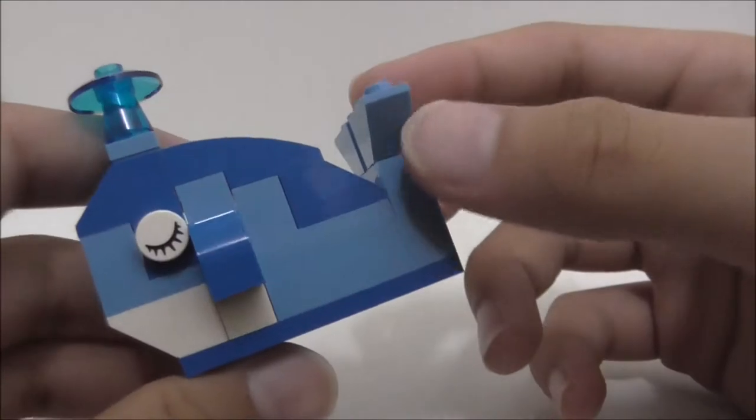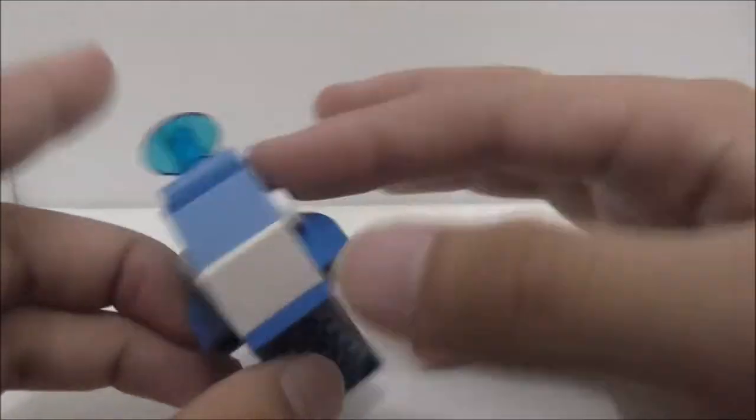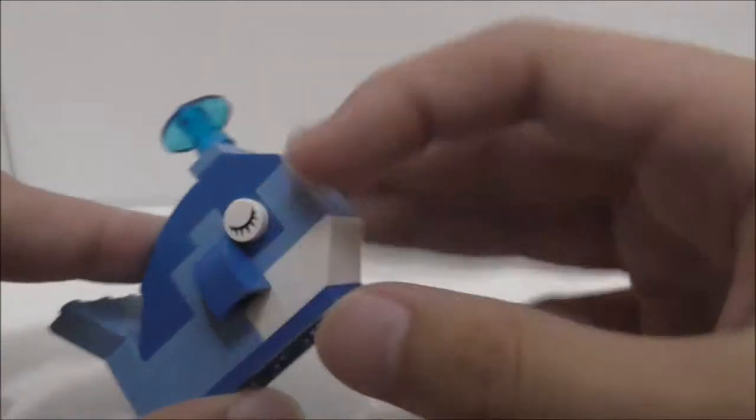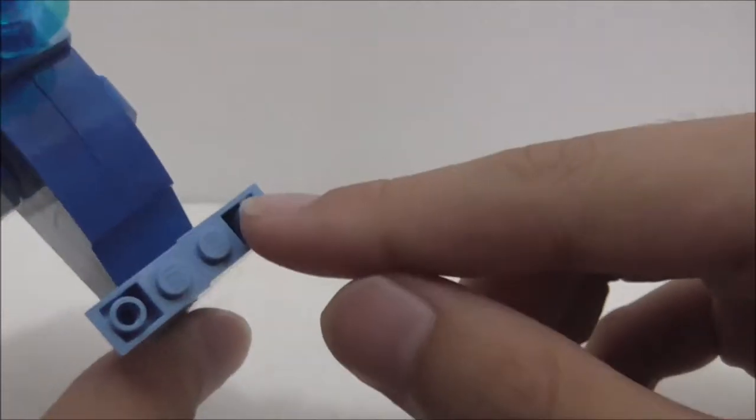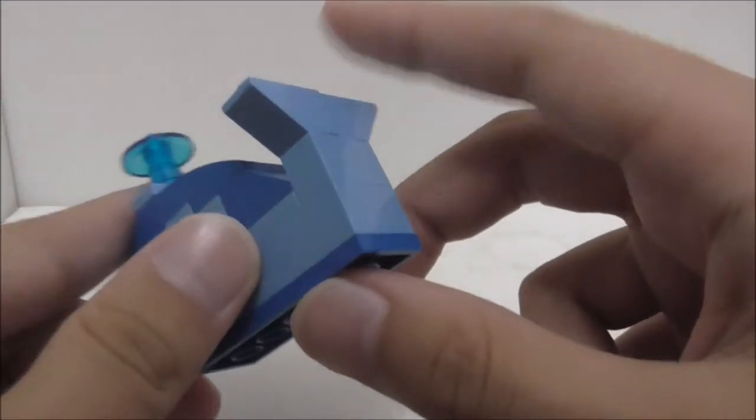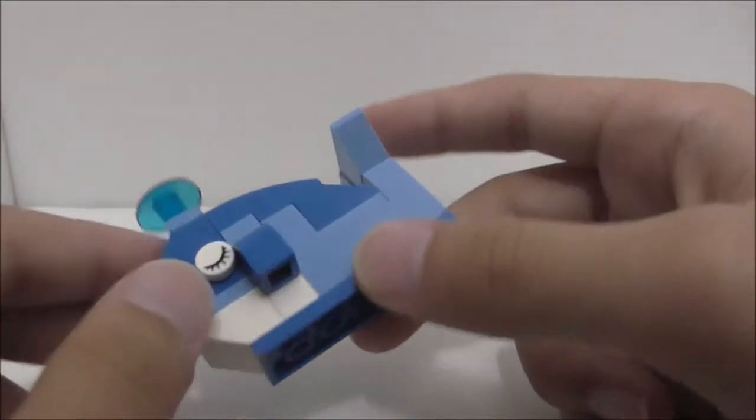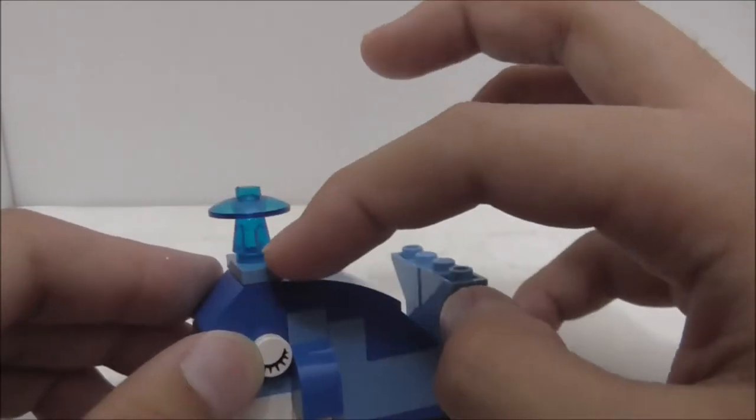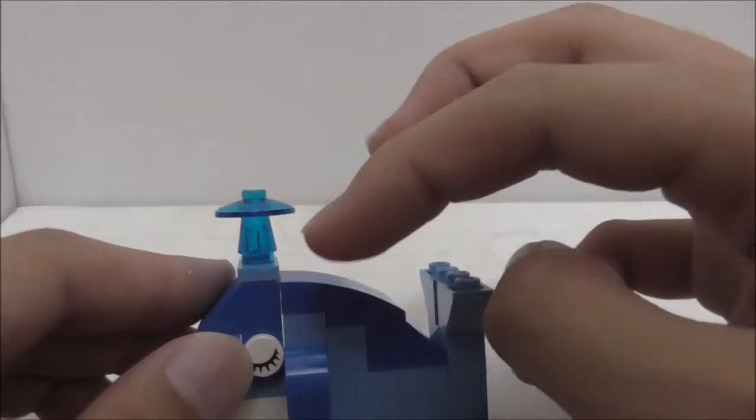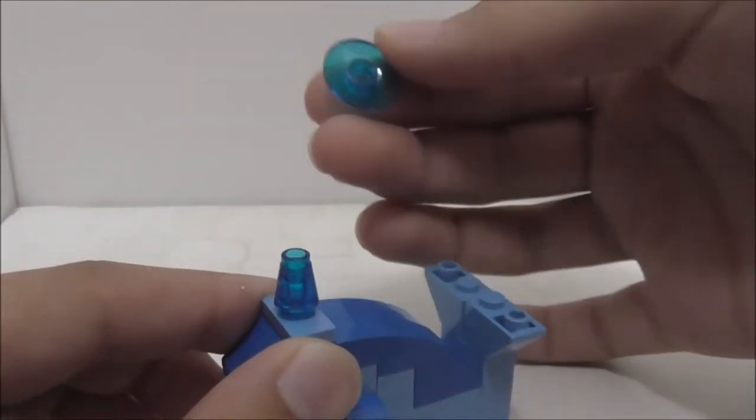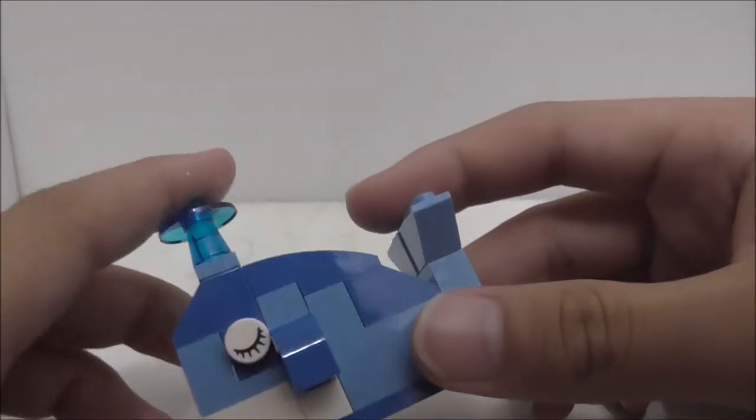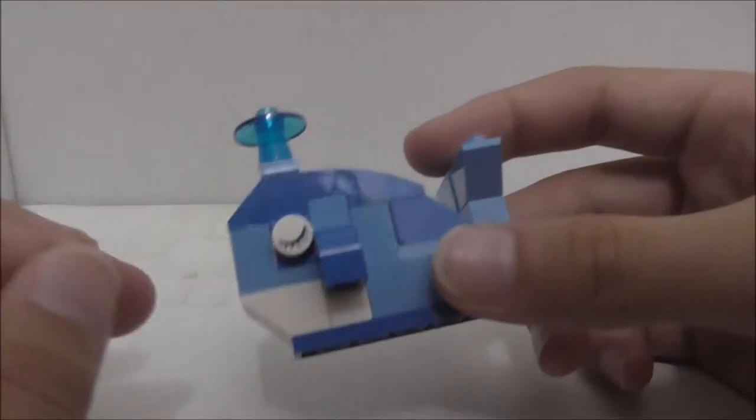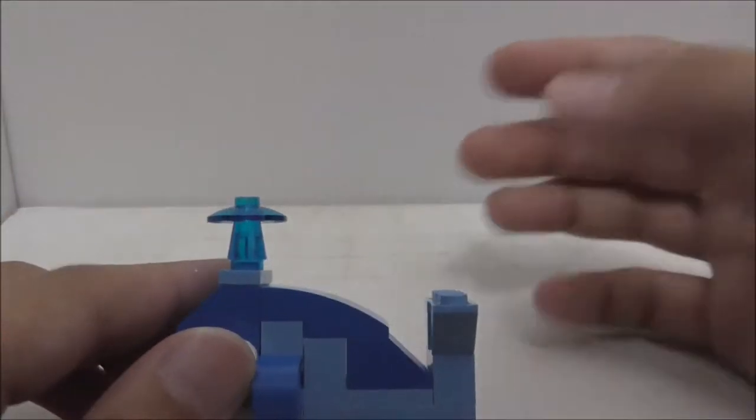You got these eyes here and they're closed. You got these side little fins and the tail which is kind of incomplete, which is kind of sad, but it still looks like the shape of the tail. You also got this top breathing part and this dolphin is currently pushing out water.